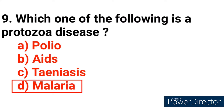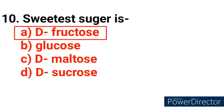Question number 9: Which one of the following is a protozoan disease? Answer option D — malaria. Question number 10: The sweetest sugar is? Answer option A — D-fructose.